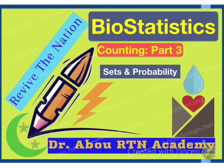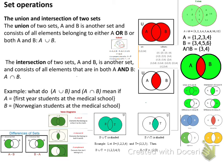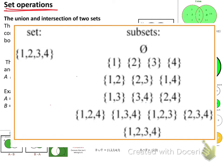Hey everyone and welcome to Dr. Abu RTN Academy channel. Today we are going to discuss part 3 of the biostatistics, which talks about sets and probabilities. Our focus in this video will be based on set operations. Just as math has operations like multiplication, addition, subtraction, sets also have their own operations: union, intersection, and complement.